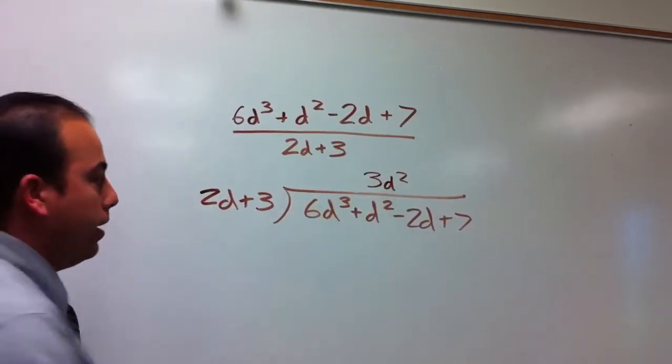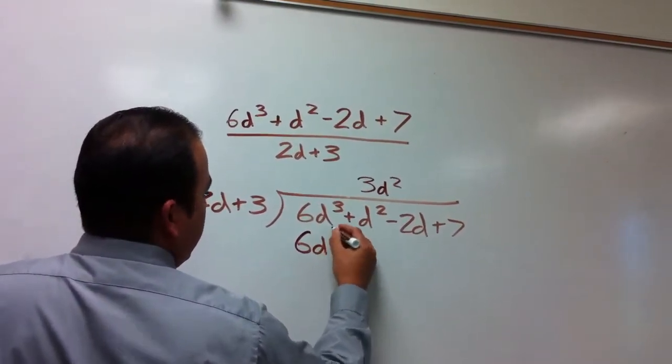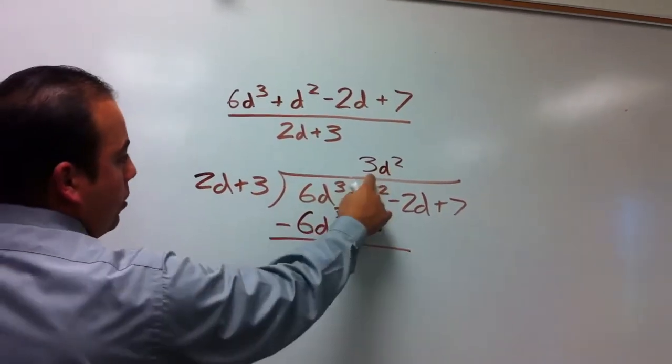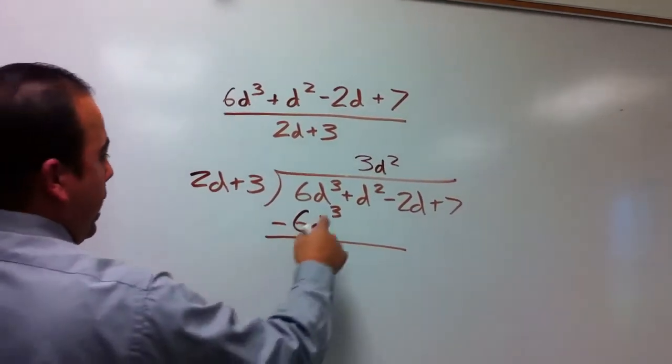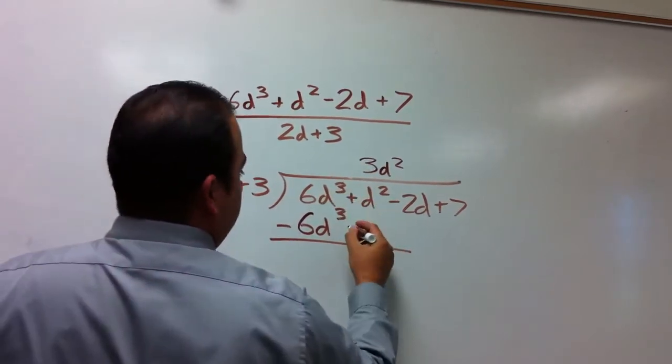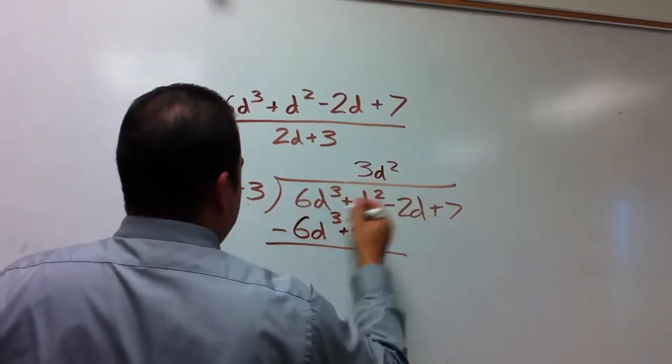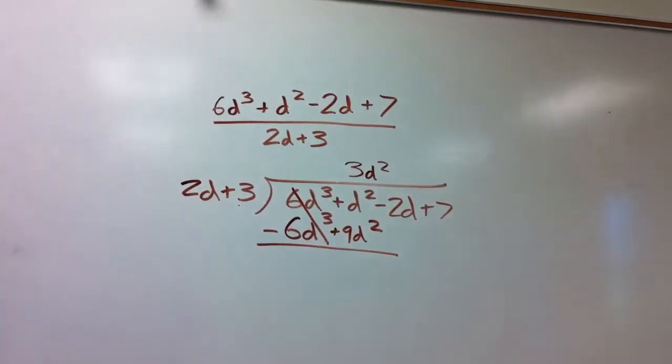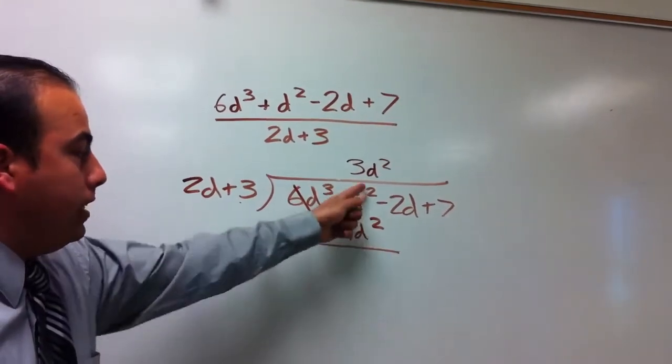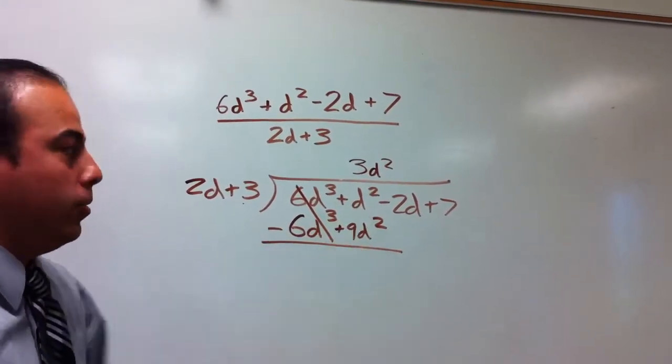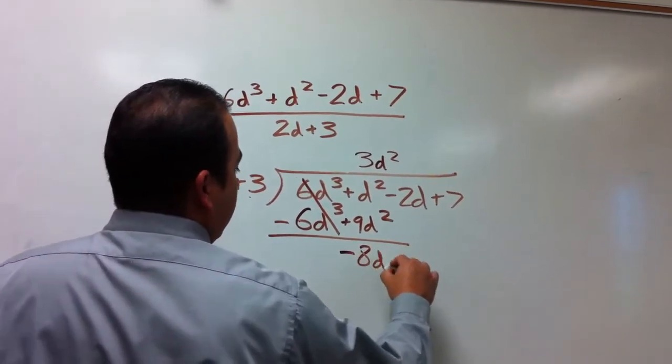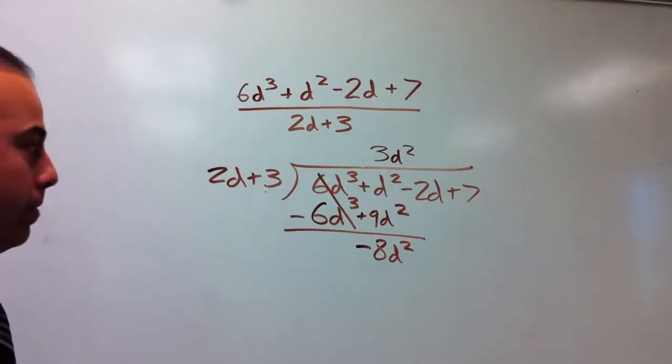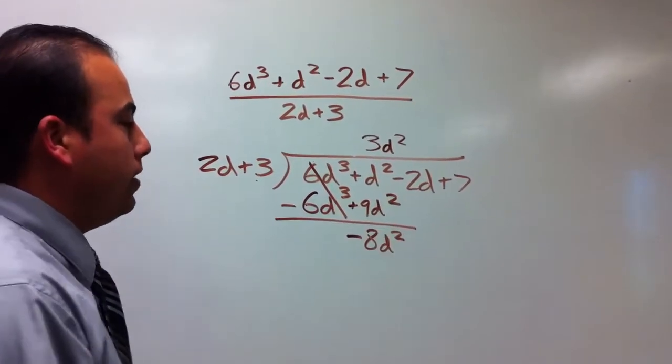2d times 3d² gives me 6d³. Remember, in division you're subtracting here. Then I'm going to multiply the same thing by what's over here. 3 times 3 is 9, and d² is what's left over. So now this 6d³ cancels out. We have 1d² minus 9d², which gives me -8d². The d² does not cancel out because that's its last name. The 9d² is attached to it, so the d² does not cancel out.